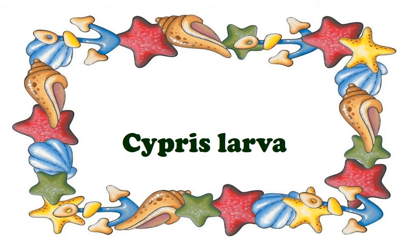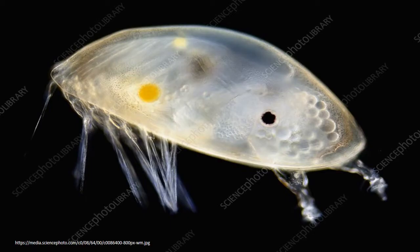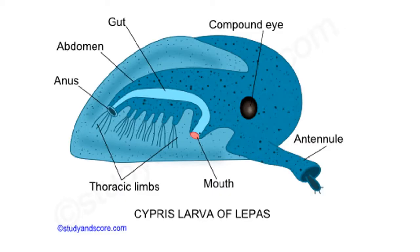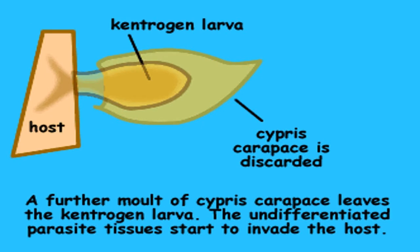The Cirripedia like Lepas and Sacculina have a Nauplius larvae passing into the Cypris stage. In this form, the body and appendages are enclosed within a bivalved shell provided with adductor muscles as seen in the adult Cypris. Its modified antennules have cement glands at their base. All other cephalic appendages with a compound eye except antennae are present. Six pairs of biramous thoracic limbs are formed. It has an abdomen with four to five segments.